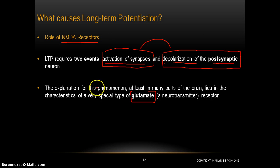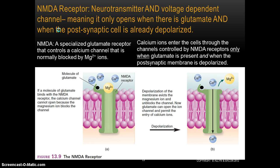The explanation for this phenomenon of long-term potentiation, at least in many parts of the brain, has to do with a special type of neurotransmitter we've mentioned already — glutamate — and the receptor for glutamate, which is called an NMDA receptor. So NMDA is a specialized glutamate receptor, meaning glutamate binds with it, since NMDA is the receptor and glutamate is the neurotransmitter. It controls a calcium channel.